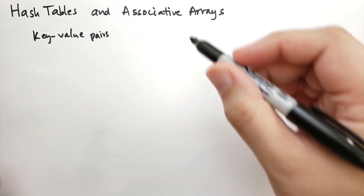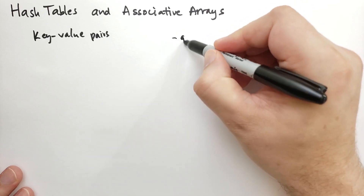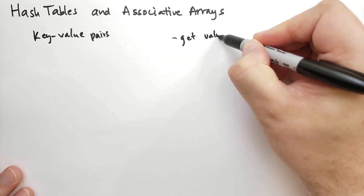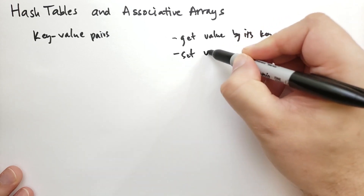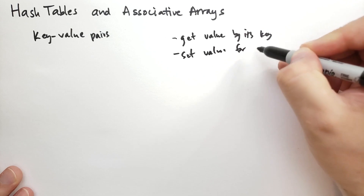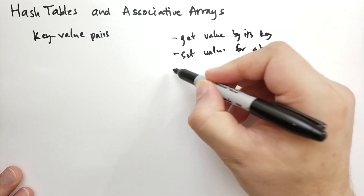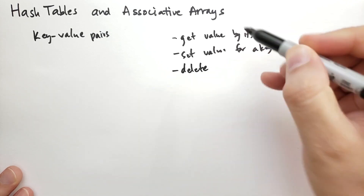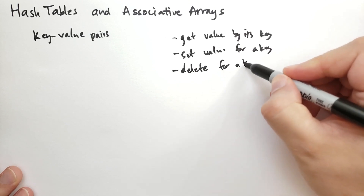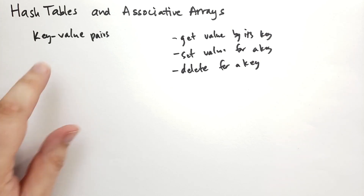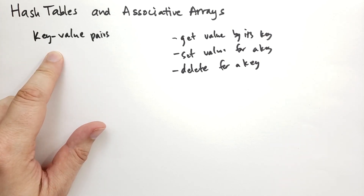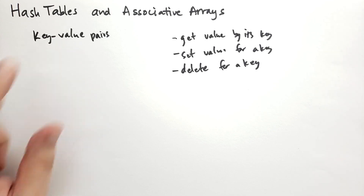Typically with an associative array, we have the following operations: we can get a value by its key, we can set a value for a key, and we can also delete an entry for a key. The associative array data structure is really an abstract data structure, because it doesn't describe how these key-value pairs must be stored. There are several ways of implementing this, with the hash table being the most common.